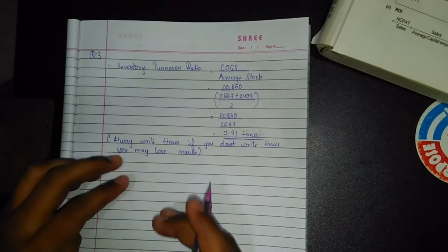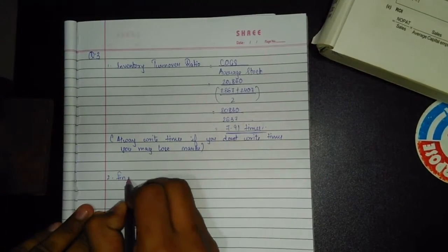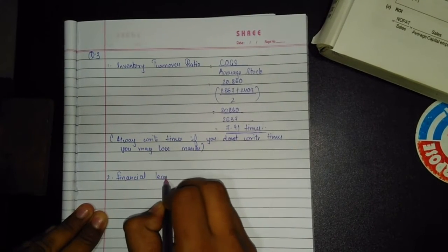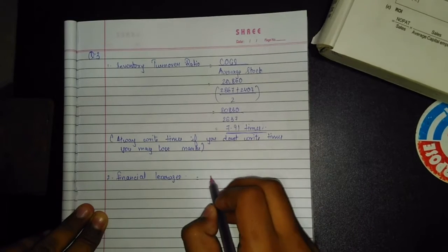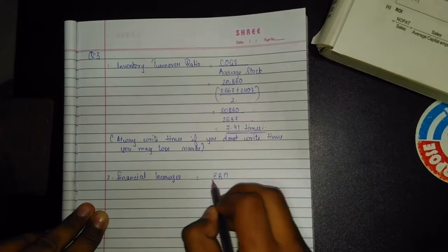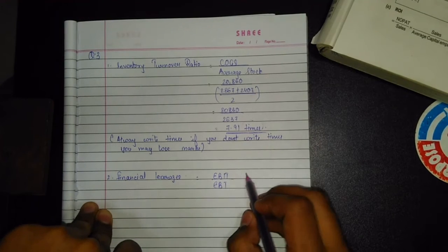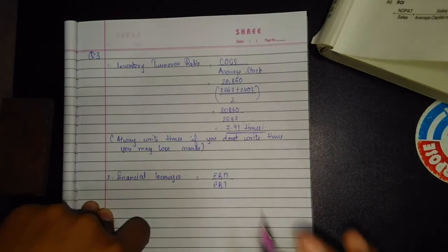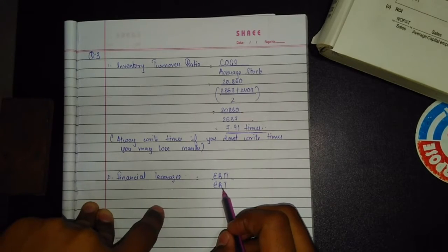Second is financial leverage — simply copy this, it's a very simple formula. The formula is EBIT divided by EBT. EBIT refers to Earnings Before Interest and Tax, and EBT stands for Earnings Before Tax.